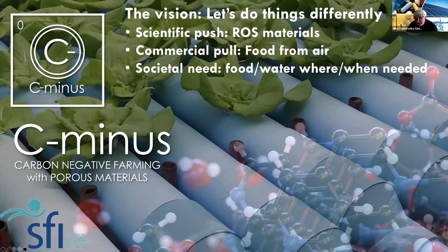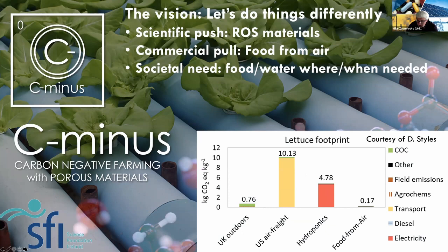Now we have these ROS materials — what can we do? If you have multiple ROSs for multiple sorbates, such as water and CO2, then you can do something like self-contained farming. In self-contained farming, the ROS does all the work for you. In terms of the carbon footprint, the so-called food-from-air approach has a much lower carbon footprint than conventional farming, and far less than air-freighted goods and hydroponics. So that's one vision — it's not quite carbon neutral, but it's awfully close.